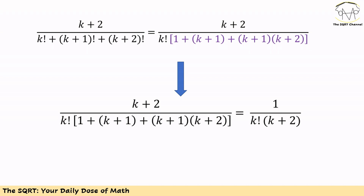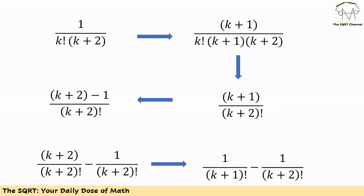Using (k+2) squared for the purple term, we can cancel k+2 from both the numerator and denominator. The outcome is 1 over k factorial times (k+2). We are now going to convert this expression into a telescoping series, noting that we have k factorial times (k+2) in the denominator.